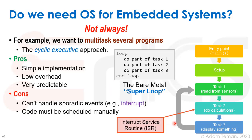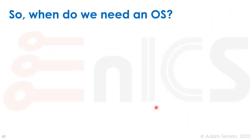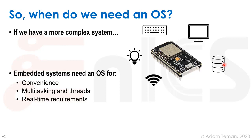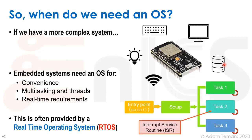The problem with the bare metal super loop is that it can't handle sporadic events. For example, if an interrupt comes in the middle of a task, it complicates things and code must be scheduled manually. When we have a more complex system with different types of peripherals and tasks, embedded systems need an operating system for convenience, multitasking, running different threads, and real-time requirements — often provided by an RTOS, which manages which task is running and can handle interrupts.